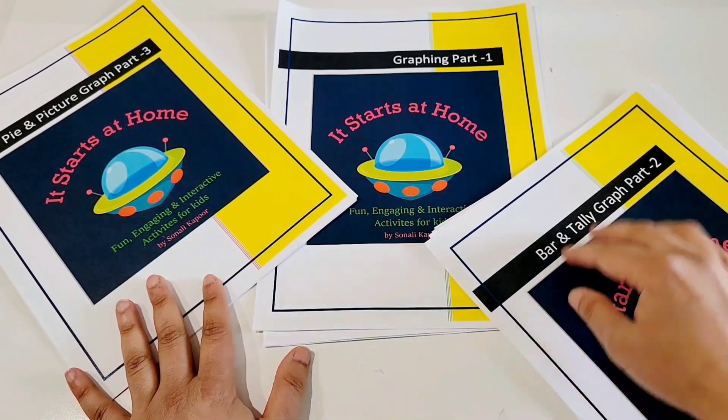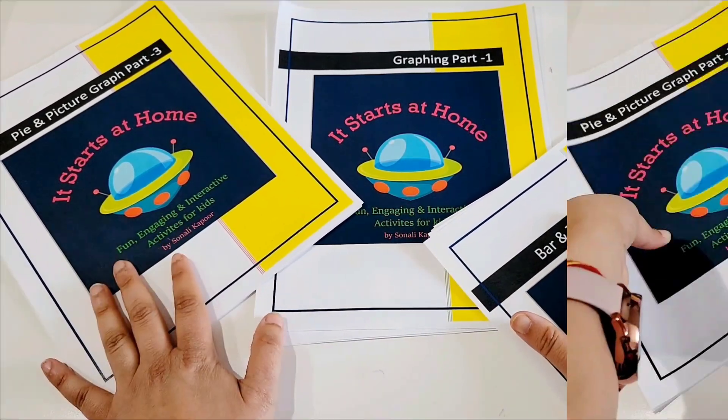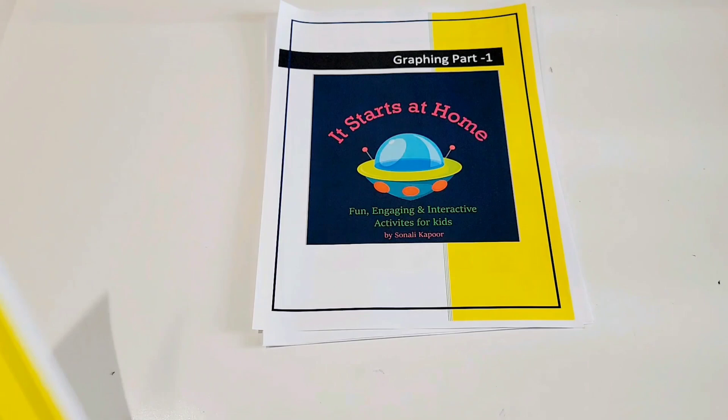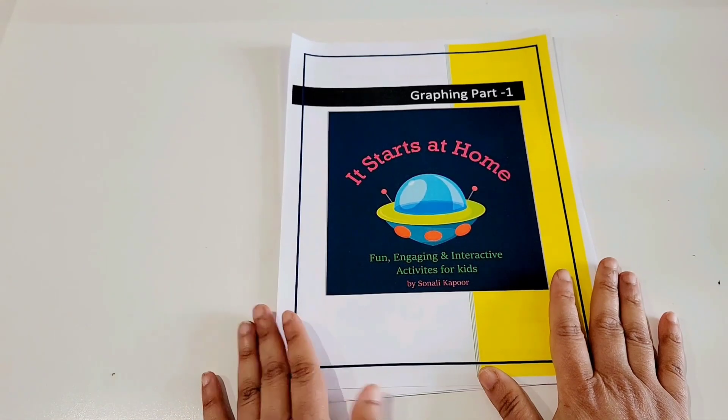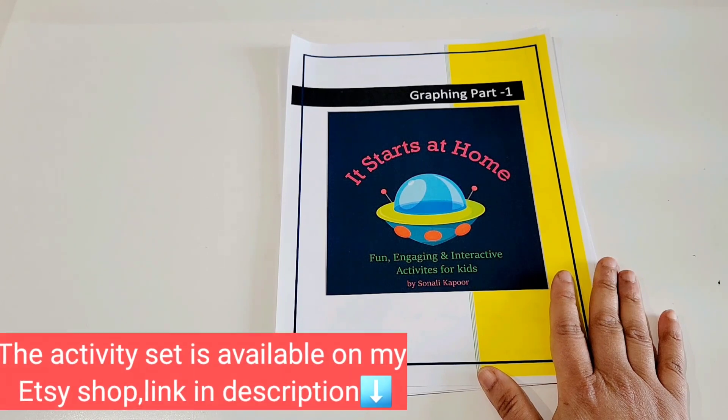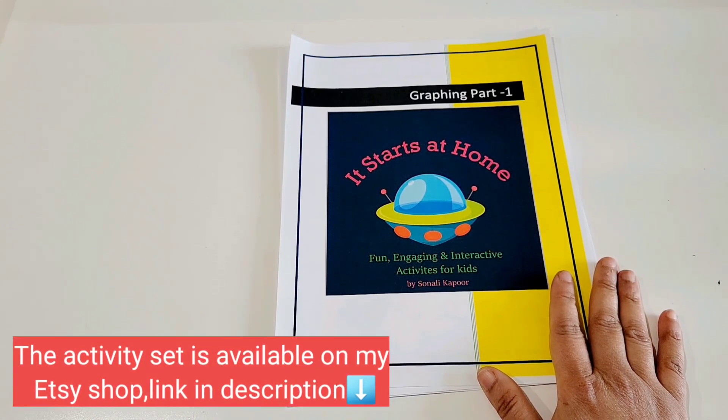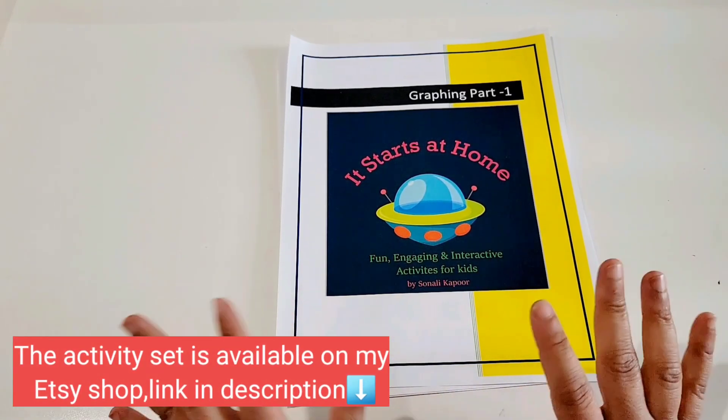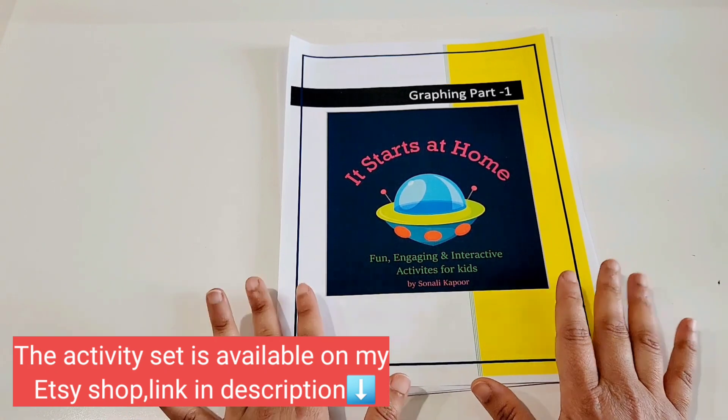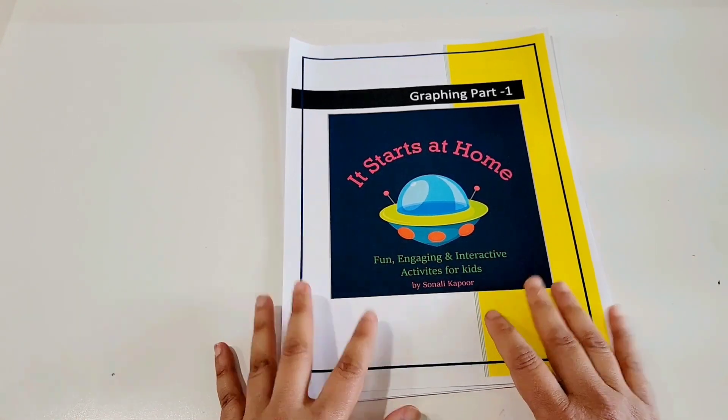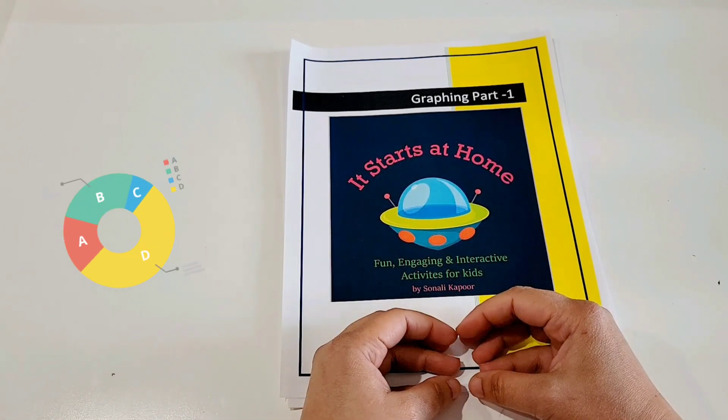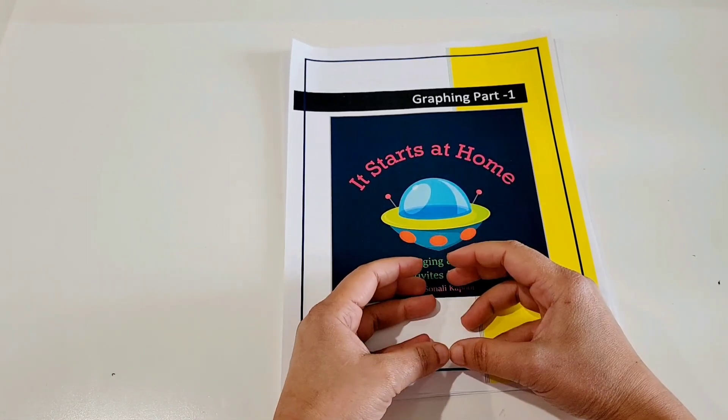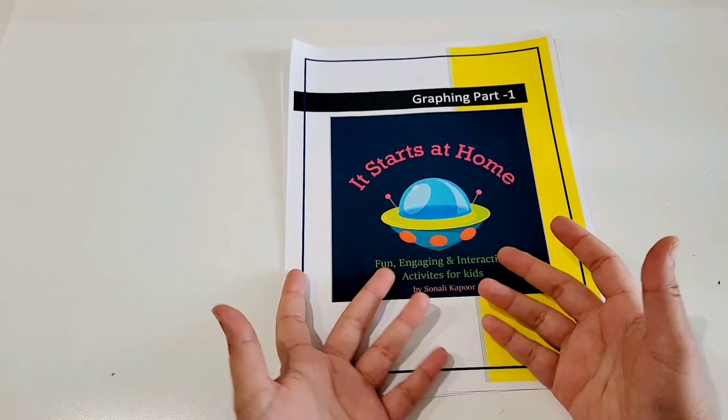In part 2 we have bar and tally graph and in graphing part 1 you have the introduction of what is graphing, which is generally done with kids who are either in grade 1 or grade 2, depending on which school you are. Graphing is a very important part of activity where the kids are exposed to how to interpret pictures into bar graphs or into numbers eventually.